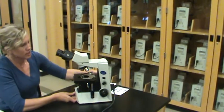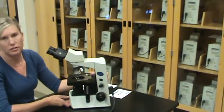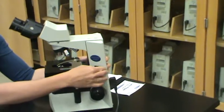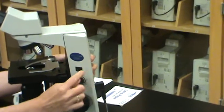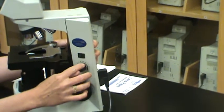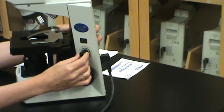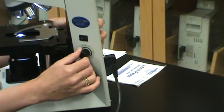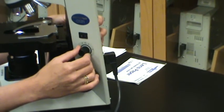The scope is plugged in and the first piece of the scope that we'd like to find is the power switch. The switch is located towards the back of the scope on the right-hand side, and it's just a toggle switch on and off. On this particular scope, right beneath the power switch is the dimmer knob, and it allows a different intensity of light to come through the lamp.